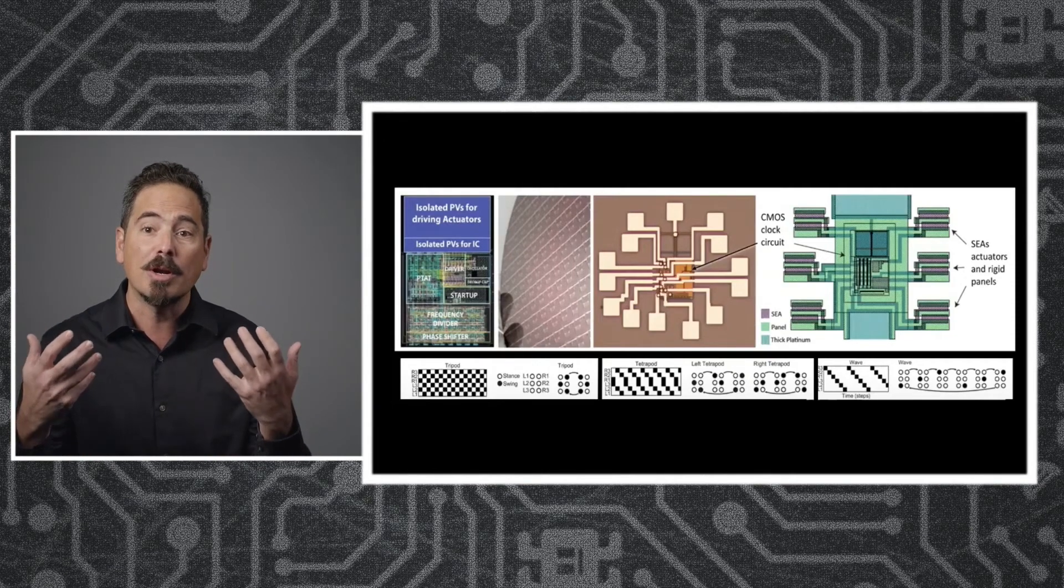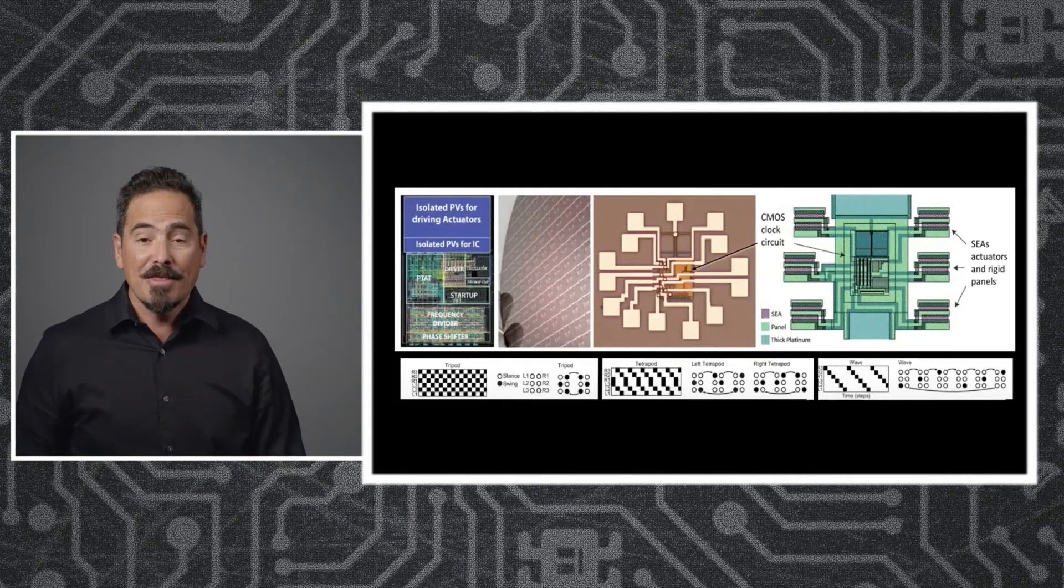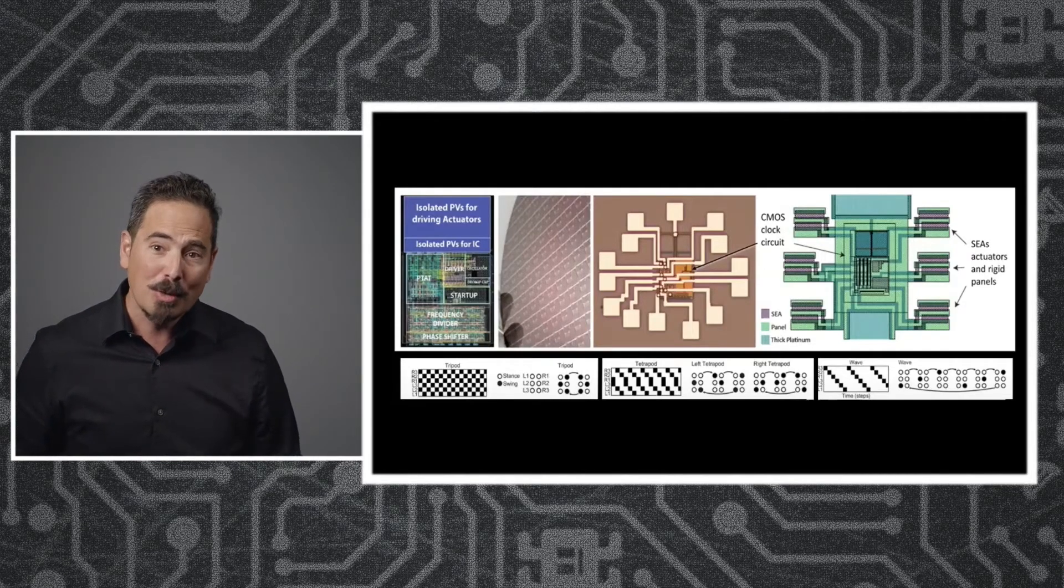This thing has a brain that coordinates the limb movements and gets the robot to move on its own. This is the moment where we cut the strings to the marionette and Pinocchio comes to life.